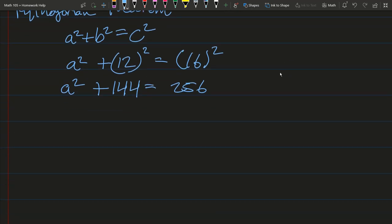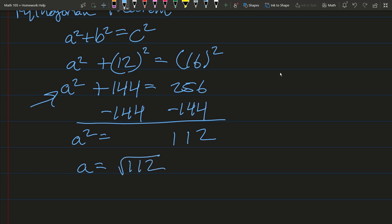So what do you do here? We want to solve for A. We want to get A by itself. So we're going to subtract 144 from both sides. And we have A squared equals. We do the subtraction. 6 minus 4, 5 minus 4, 2 minus 1. A squared is 112. So A is going to be the opposite of squaring, which is square root 112. So that will be your other side.